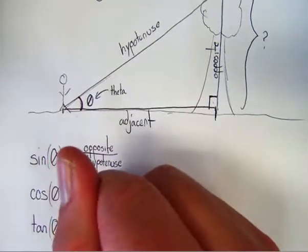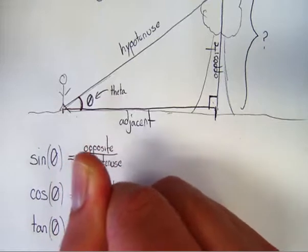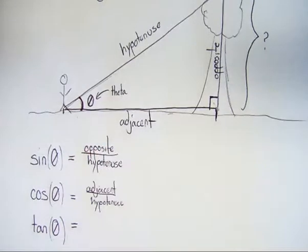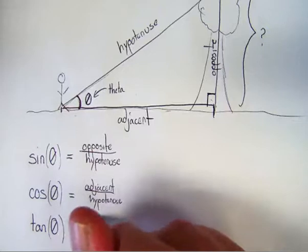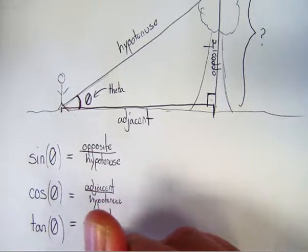So sine equals opposite over hypotenuse. The cosine is equal to the adjacent side over the hypotenuse. And tangent of theta is equal to the opposite side over the adjacent side.